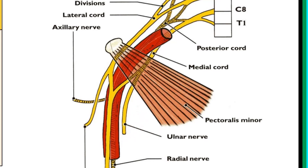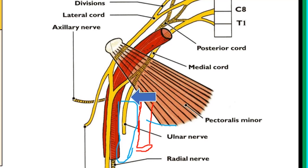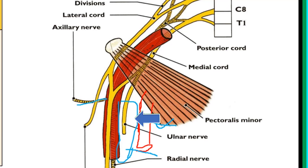Inserting the axillary vein, we see it lying medially. Above the ulnar nerve is a nerve also from the medial cord — the medial cutaneous nerve of the forearm, running above the ulnar nerve. So in this relation: medial to the ulnar nerve is the axillary vein, lateral is the axillary artery, above is the medial cutaneous nerve of the forearm, and posteriorly is the posterior wall of the axilla and the long head of the triceps muscle.